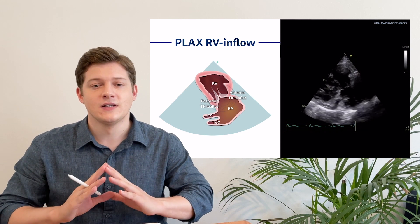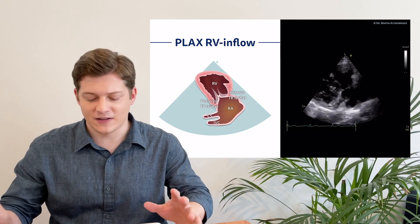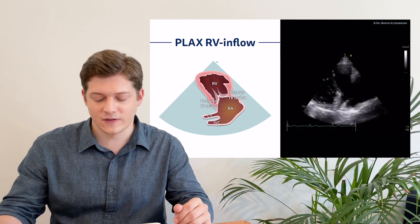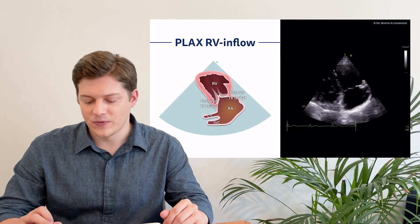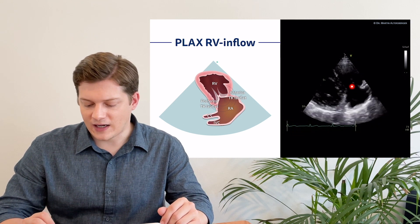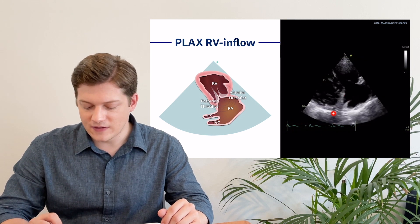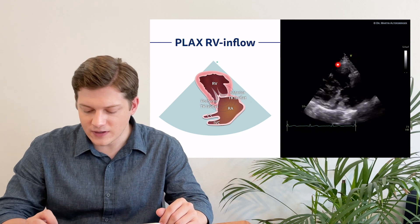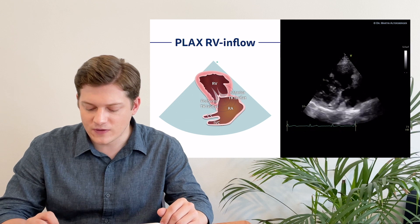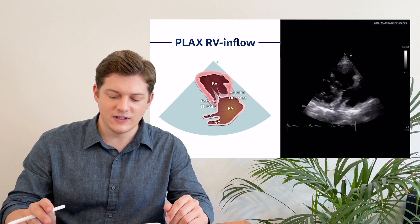You cannot see the anterior and the posterior leaflet of the tricuspid valve differentiated in any other view. This is very important — for example, in cases of drug abuse, patients can have endocarditis of the tricuspid valve, which you can nicely visualize in this view. This is the anterior leaflet and this is the posterior leaflet. The main structures we see here constitute the RV inflow — from the right atrium to the right ventricle — including the coronary sinus and the IVC, the inferior vena cava.